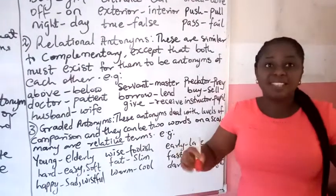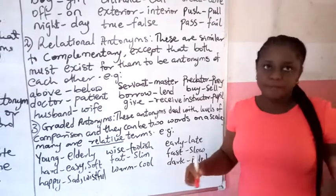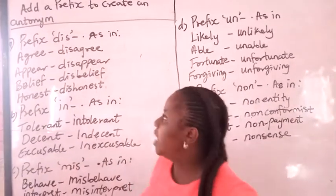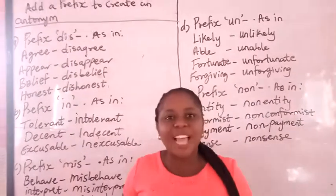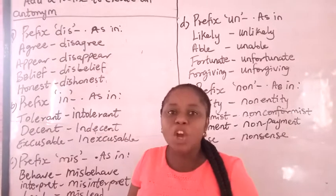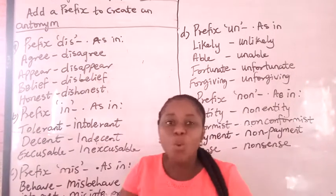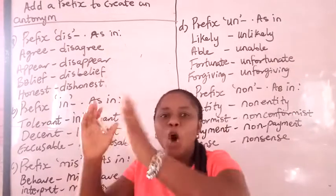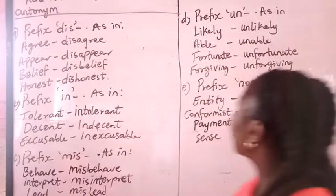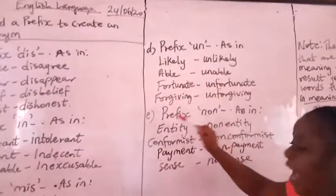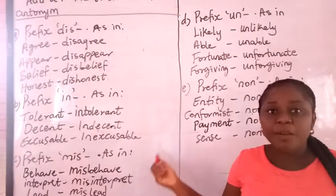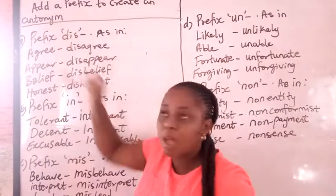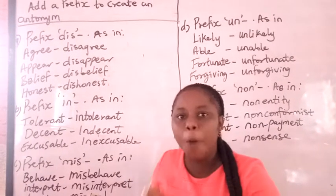The next topic is adding a prefix to create an antonym. We need to see the various prefixes which can be added to a word to make it the opposite of another word. We add a prefix before a base word and that prefix makes it opposite in meaning. There are five popular prefixes we will look at, though these are not all of them.